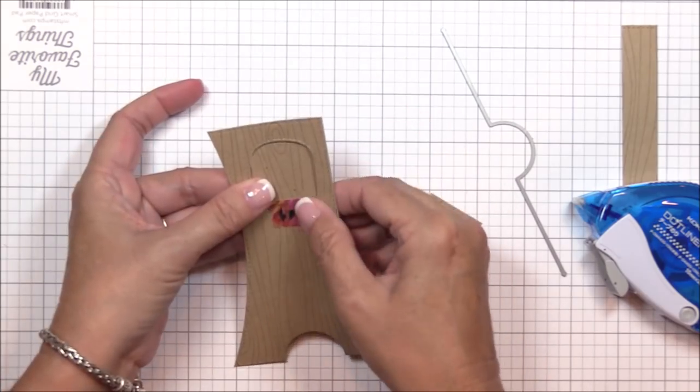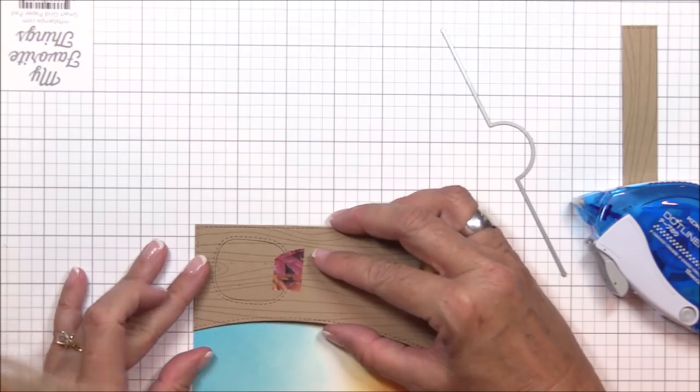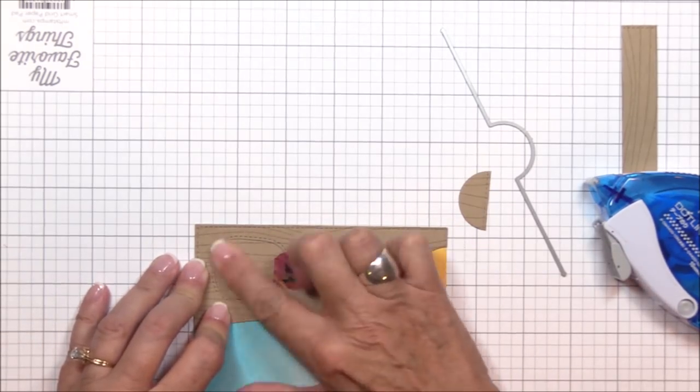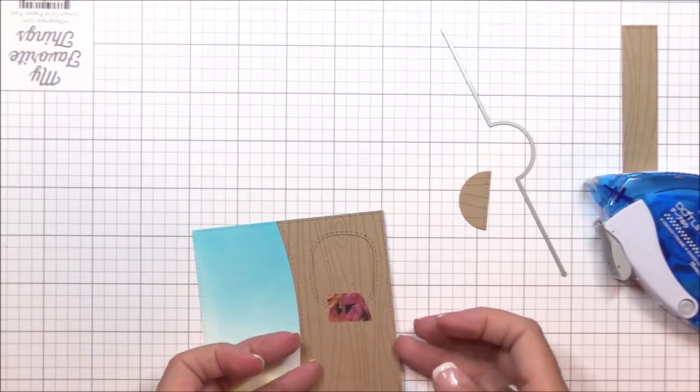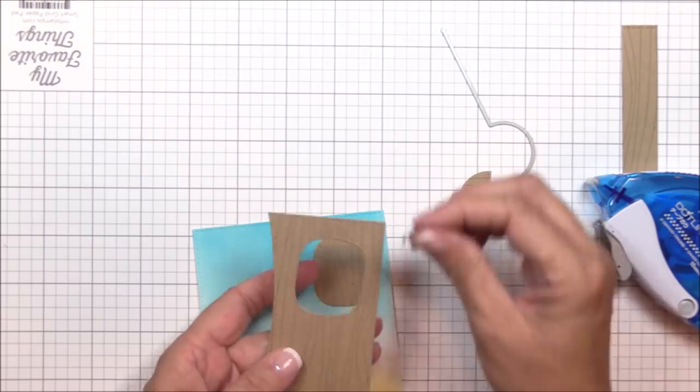I'm flipping the tree trunk over, and I'm positioning it onto the right side of an A2 panel of smooth white cardstock that I've ink blended and die cut off camera. I'll give that window a good rub to adhere it securely, and then I'll carefully remove the washi tape and the rest of the tree trunk for the next step.